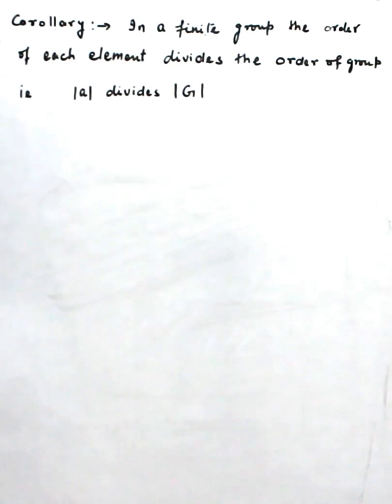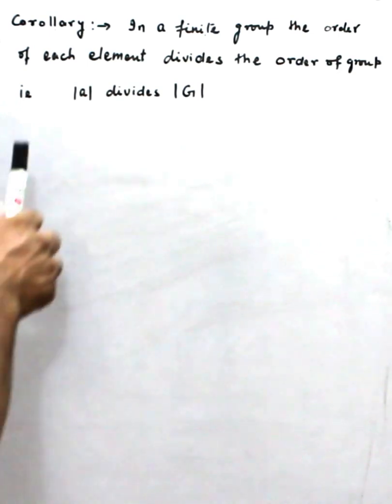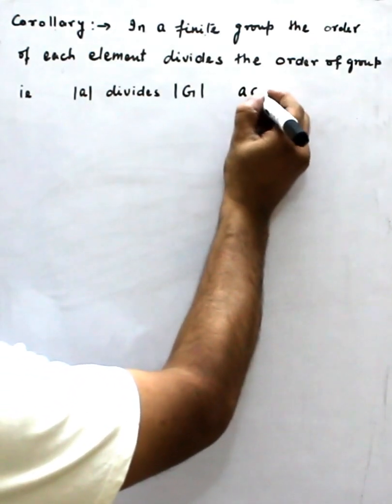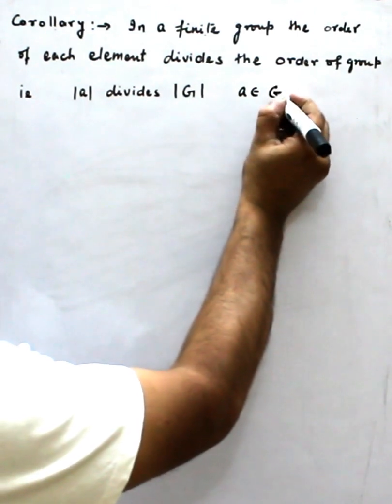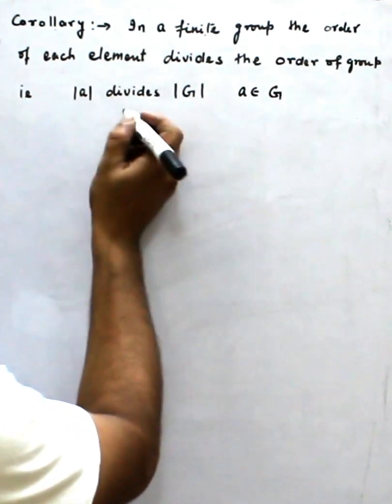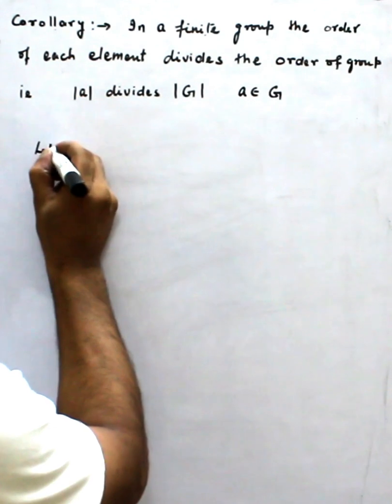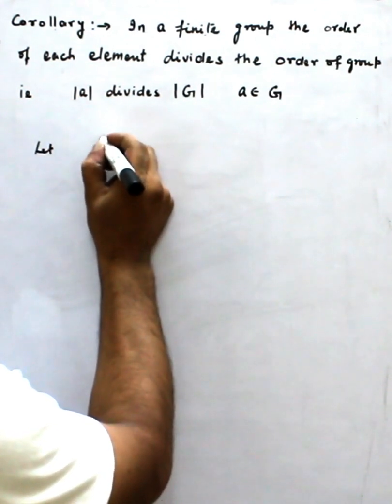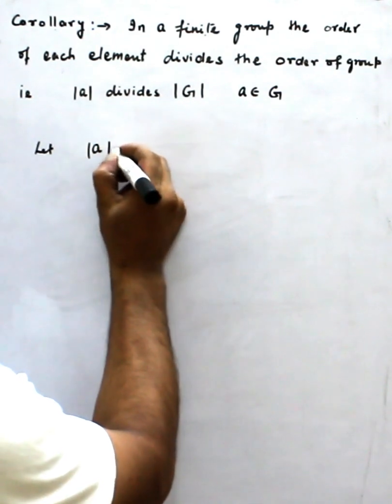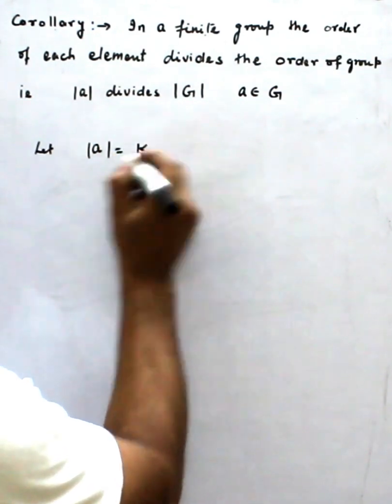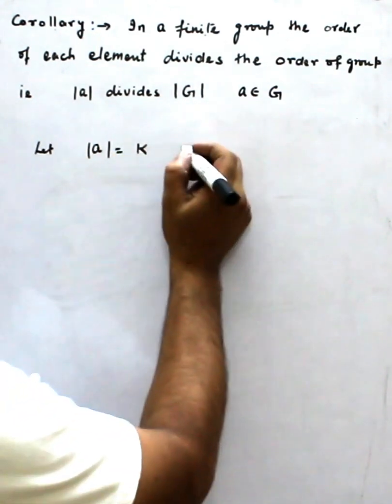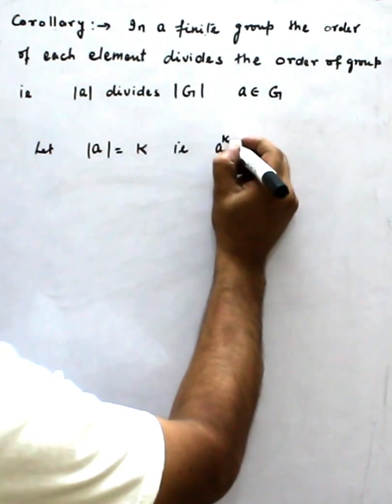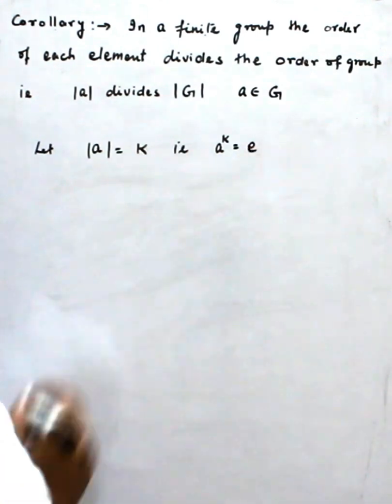And A is obviously an element of G. That is, A belongs to G. So to prove this theorem, let order of A equal K. That is, this means A to the K is equal to identity.